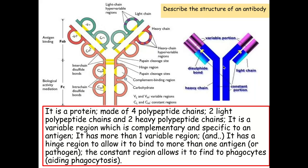We've got the constant region here - this area, the constant region, which is the heavy chain area. This allows the phagocyte to bind to the antibody, therefore aiding in the process of phagocytosis.